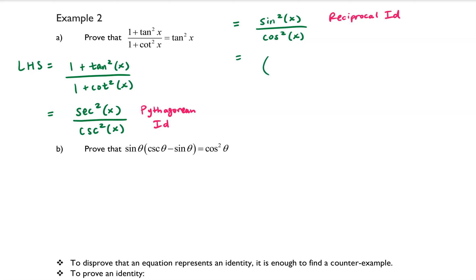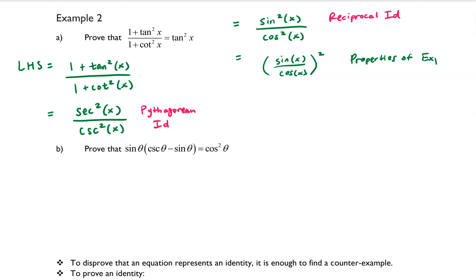From algebra, that can be rewritten as sine of x over cosine of x, that whole quantity squared — using properties of exponents. And then using another reciprocal identity, we know that sine of x over cosine of x is equal to tangent of x.